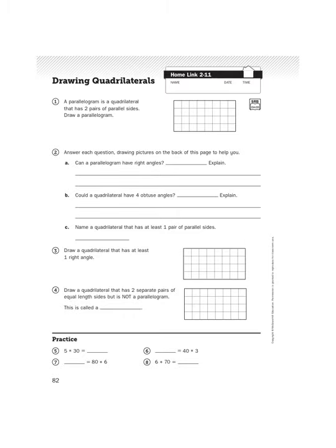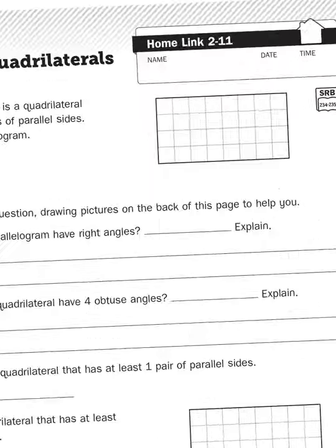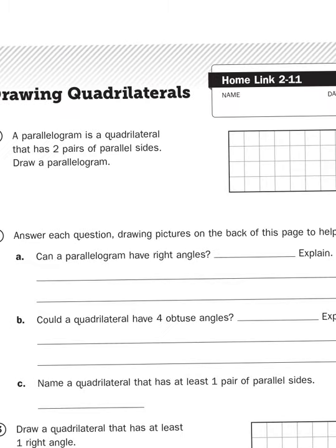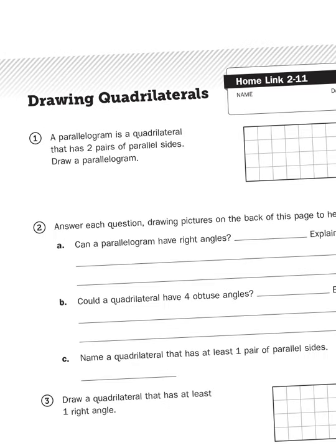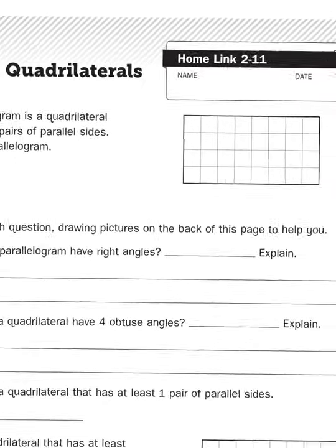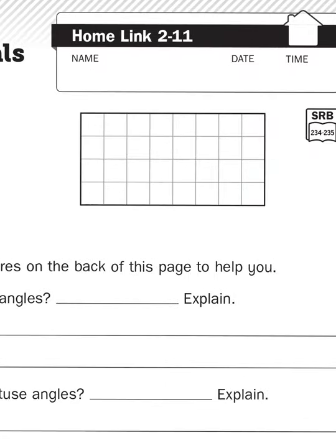Let's take a look at the first question right here. It says a parallelogram is a quadrilateral that has two pairs of parallel sides. Draw a parallelogram. So I'm actually going to use this space to draw two parallelograms to prove a point. Now when you hear the word parallelogram, a lot of you might think of a shape that looks like this. You've got some diagonal lines like so.